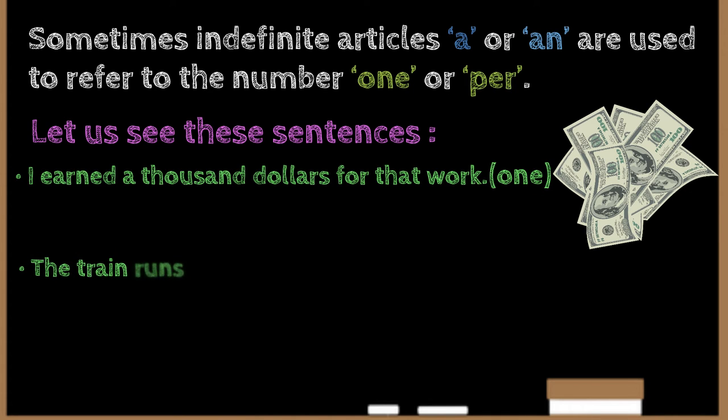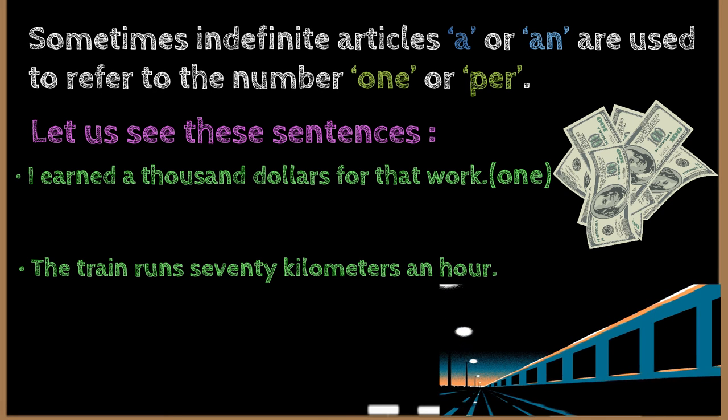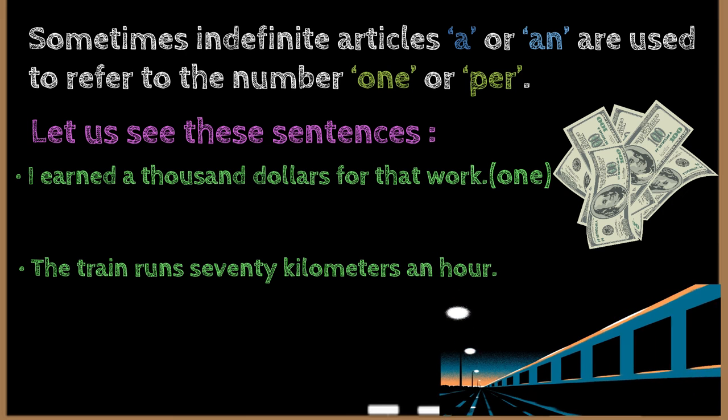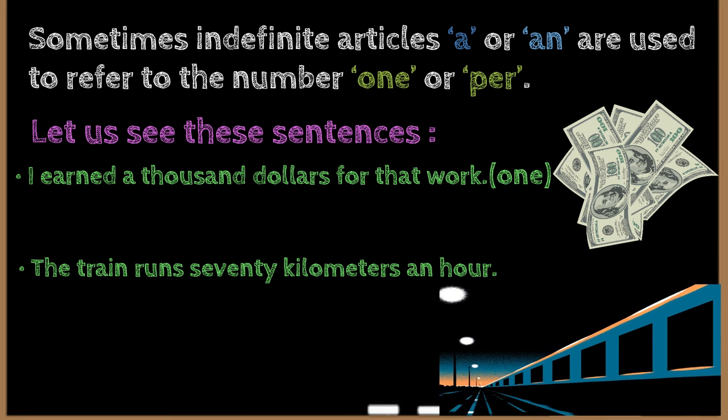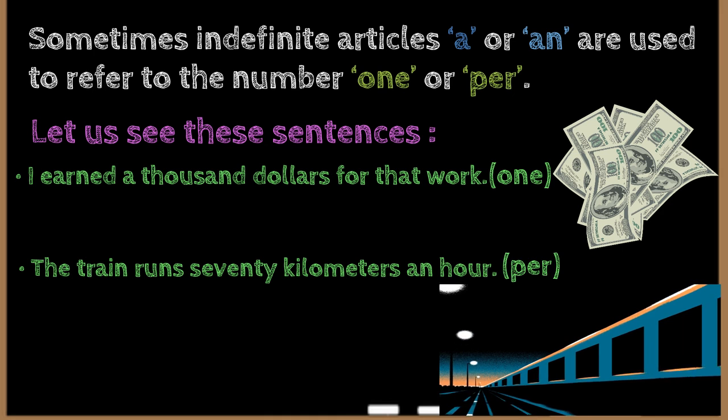The train runs seventy kilometers an hour. In this sentence, the article an is used to refer that the train runs seventy kilometers per hour.